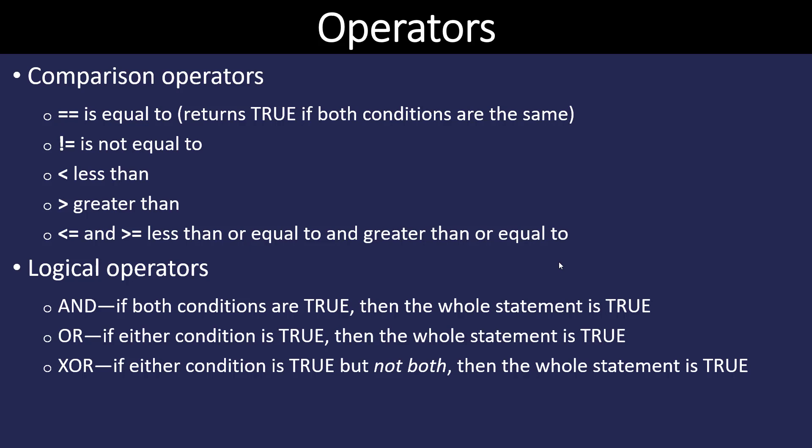To make loops and if-then statements work, we need comparison operators. Two equal signs means 'equal to' — if we want to say something is equal to, we use two equal signs, not one. An exclamation mark in front of an equal sign means 'not equal to.' We also have less than, greater than, less than or equal to, and greater than or equal to.